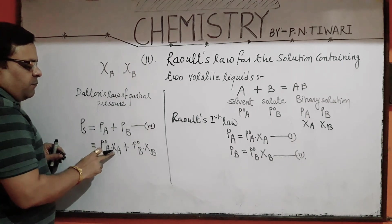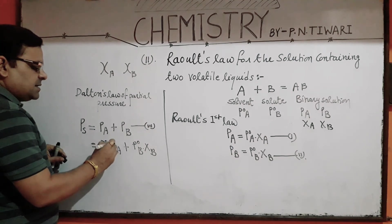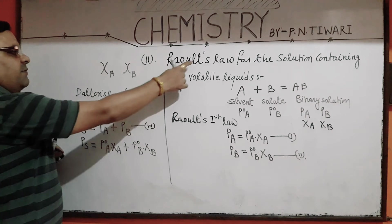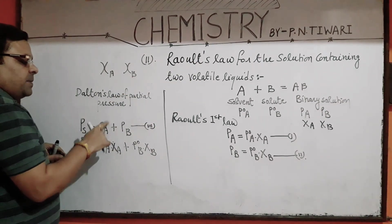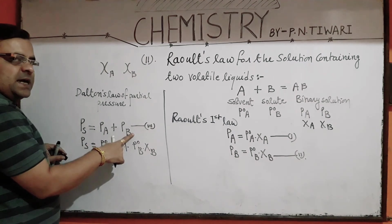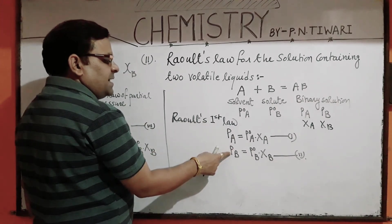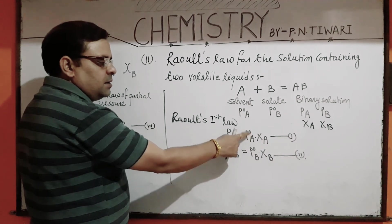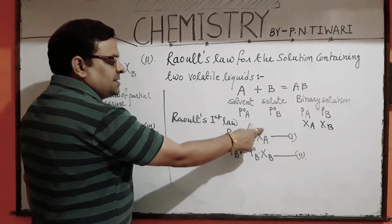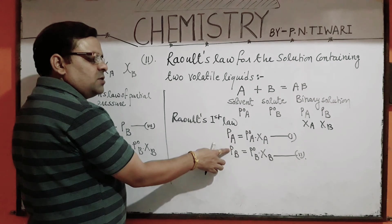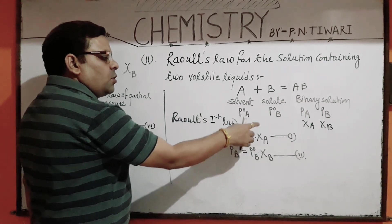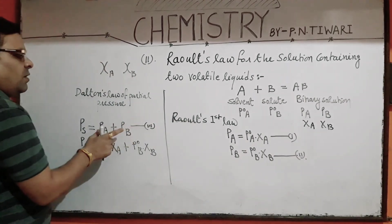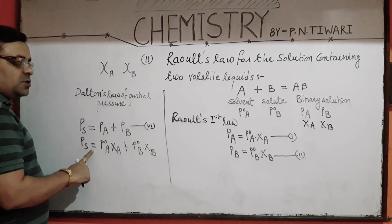In this equation, suppose mole fraction is represented by capital X. The total vapour pressure of a solution containing two volatile liquids is equal to the sum of the partial vapour pressures of solvent and solute. According to Raoult's first law, the partial vapour pressure of any component equals the product of the vapour pressure of the pure component and its mole fraction in the solution. So PA = P0A·XA and PB = P0B·XB, giving us the total vapour pressure.